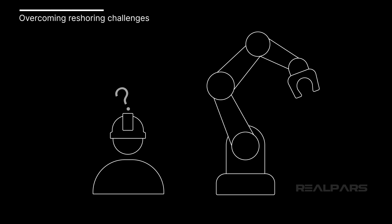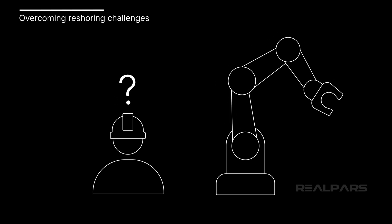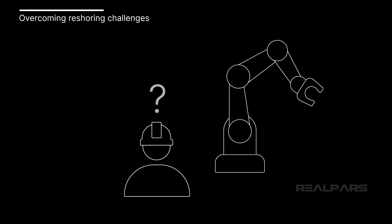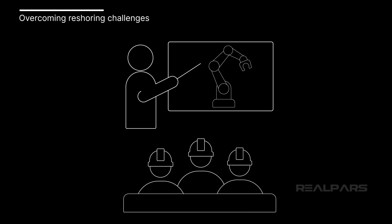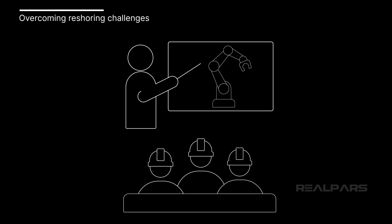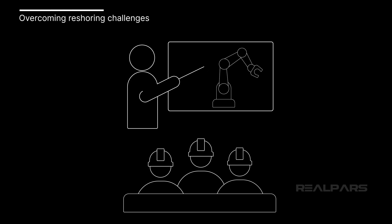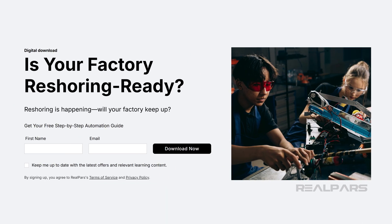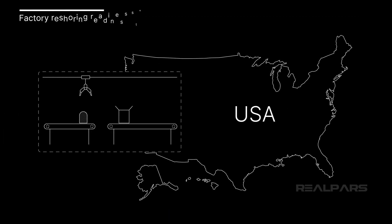A very real and well-documented roadblock is the shortage of workers trained in automation technologies. This challenge can be overcome only through training programs that focus on the in-demand skills required to operate a modern, automated manufacturing plant. Our free guide, Is Your Factory Reshoring Ready? — A Step-by-Step Automation Guide, can help you navigate these challenges and start your reshoring journey.